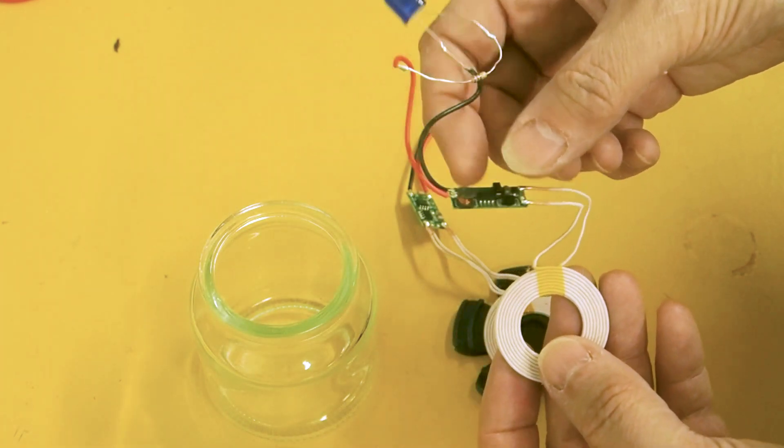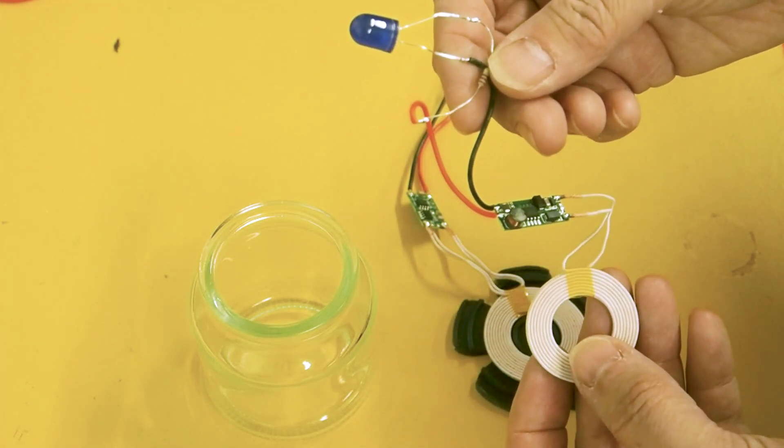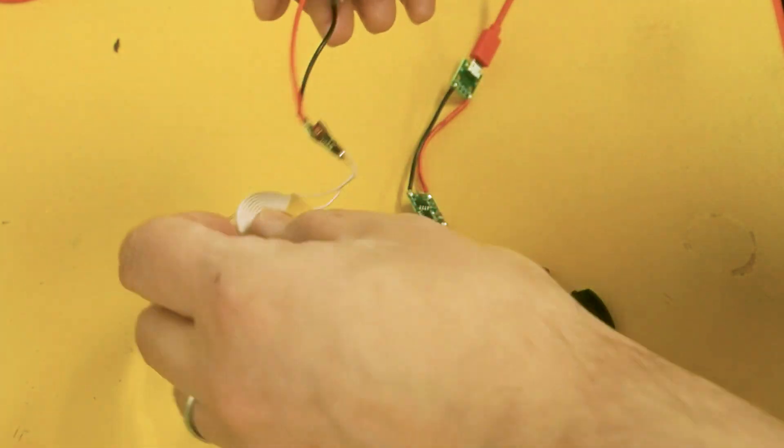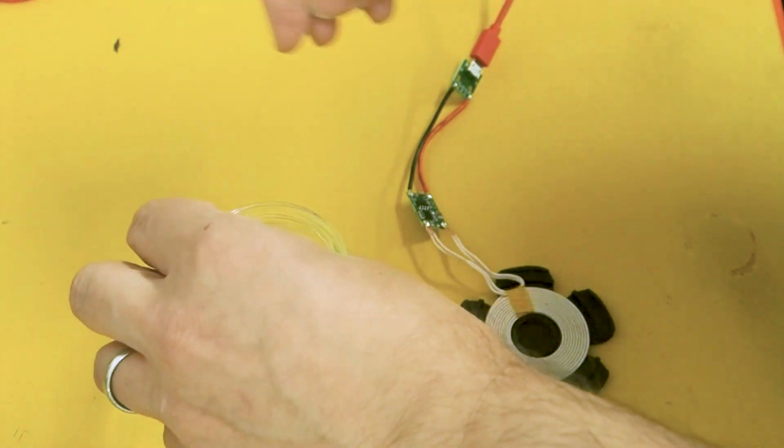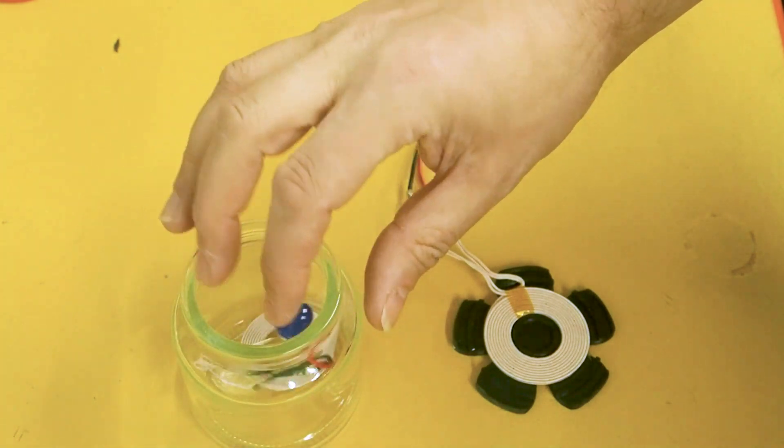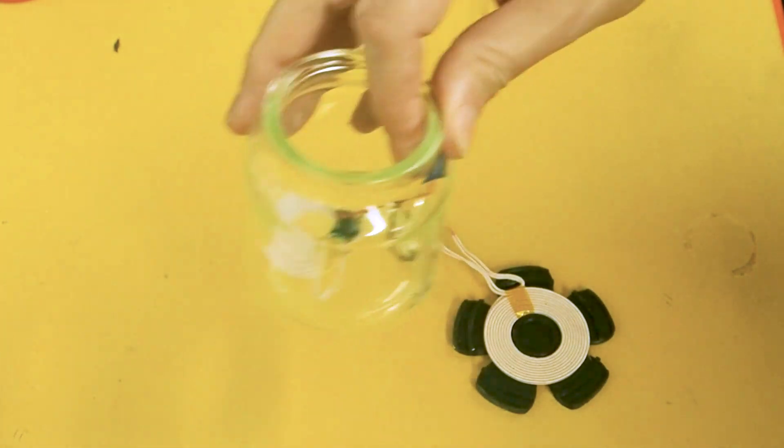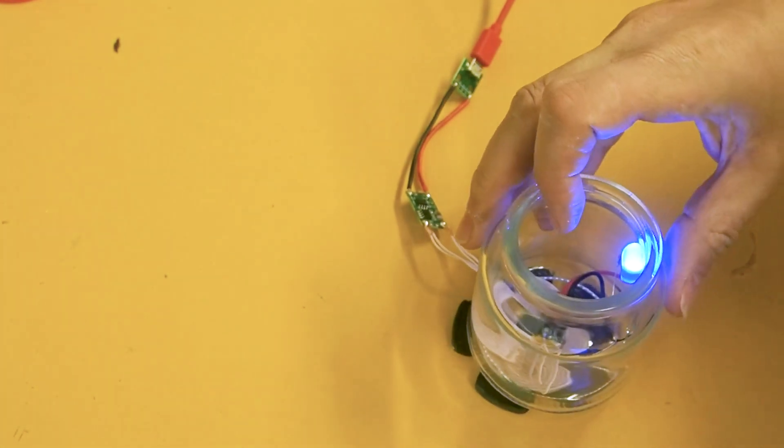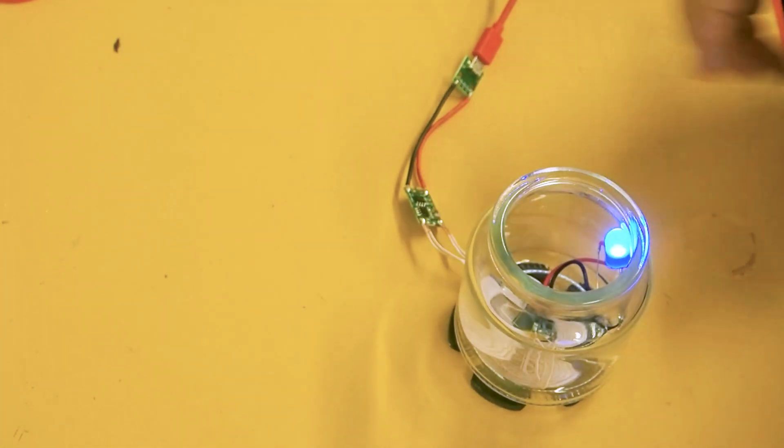Our receiving circuit and then you can put whatever load on you want so for testing here I've got an LED and a resistor. So we pop that in the glass jar and then we put it on top of the driver coil and we can see that the power is transmitted through the glass jar.